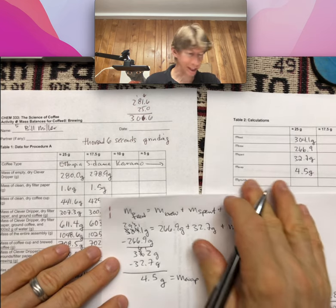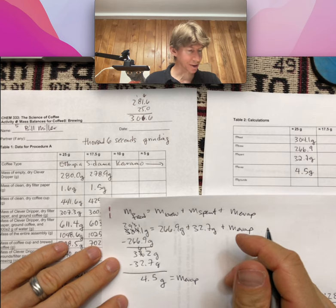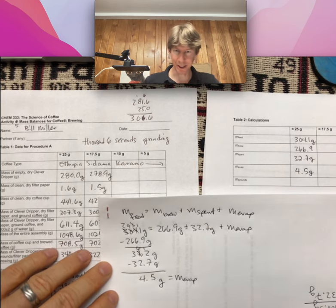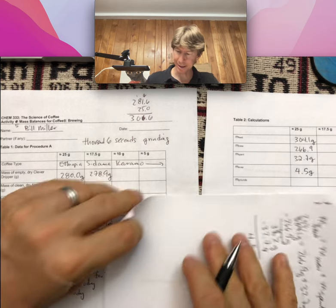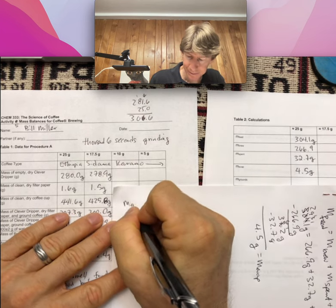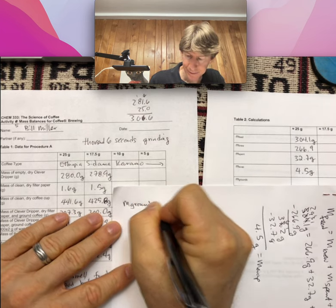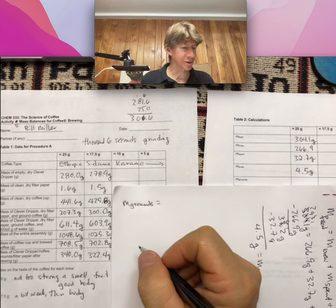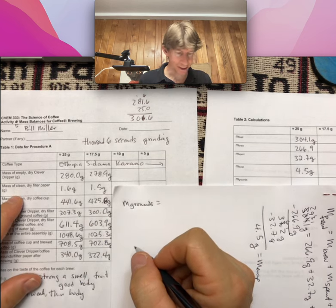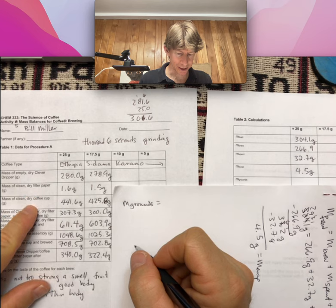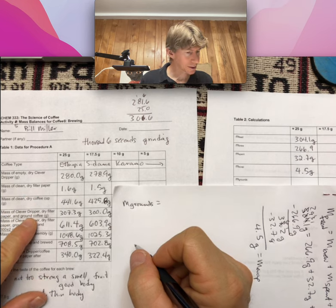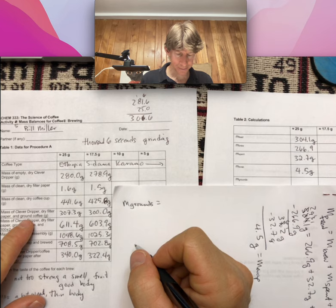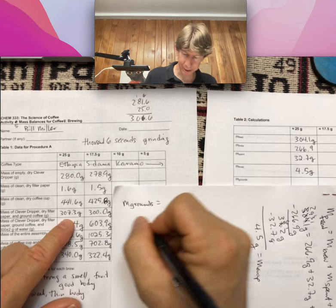And then mass of the grounds. So that we started with. For mass of grounds, it's going to be mass of clever dripper, dry filter paper, and ground coffee, 307.3.